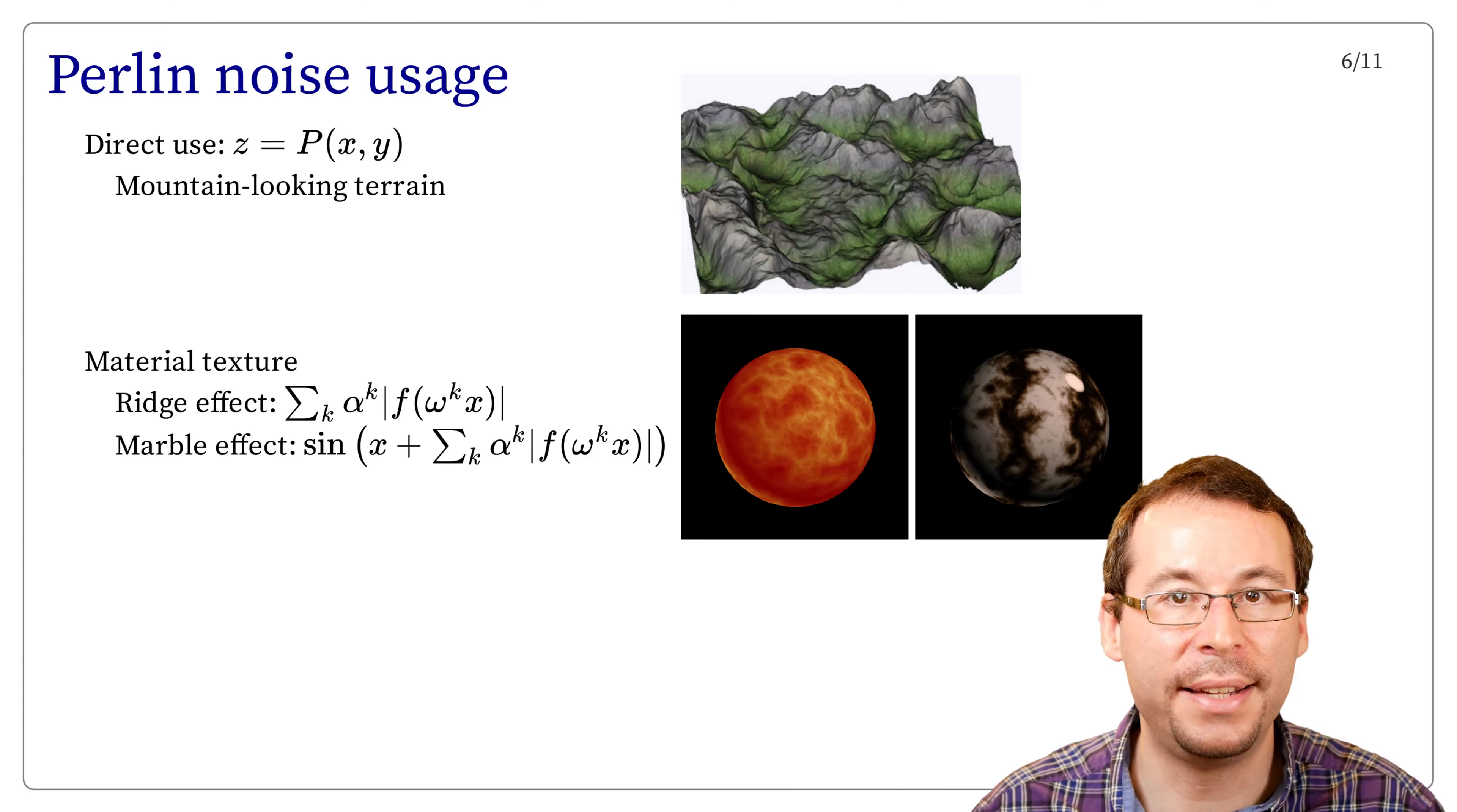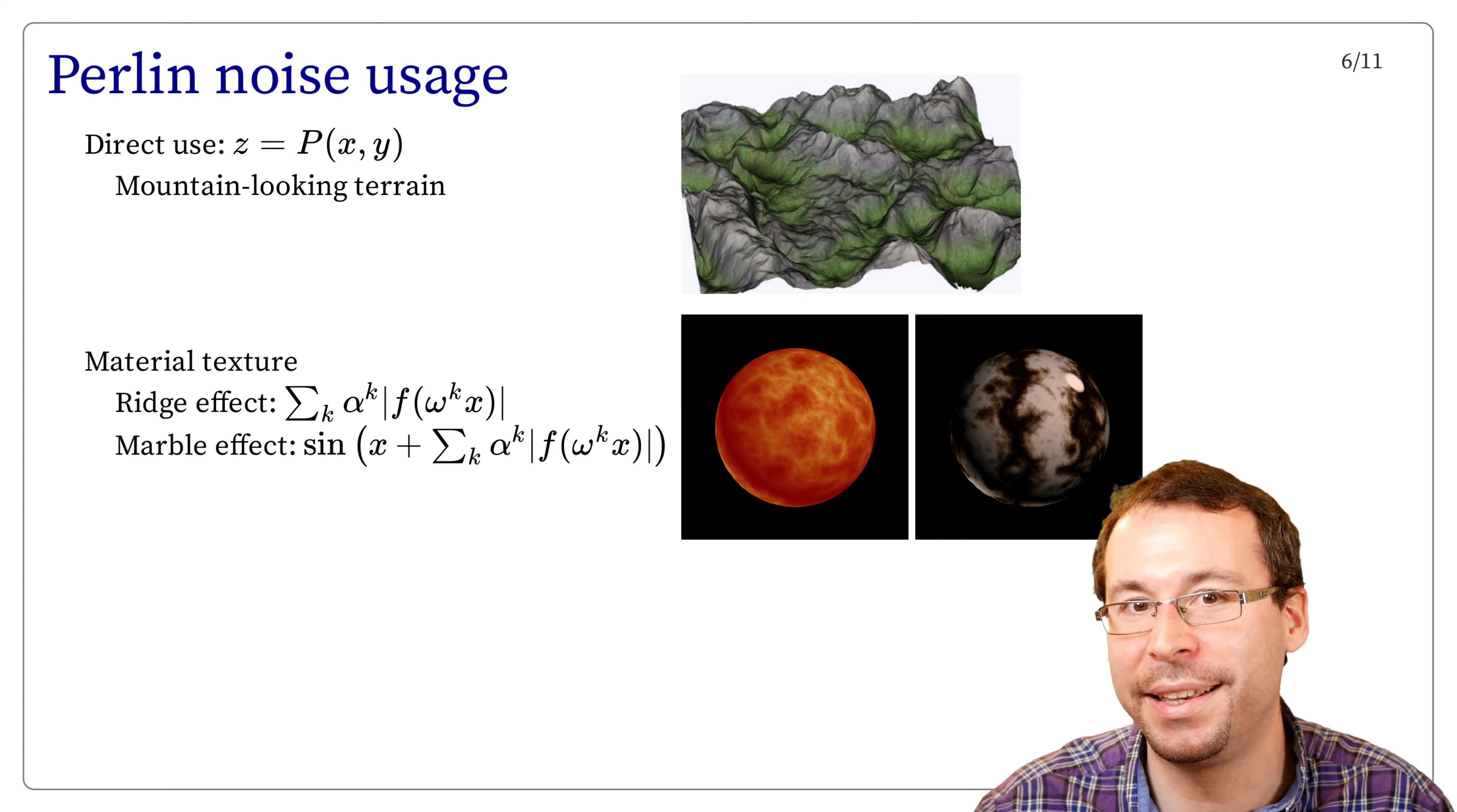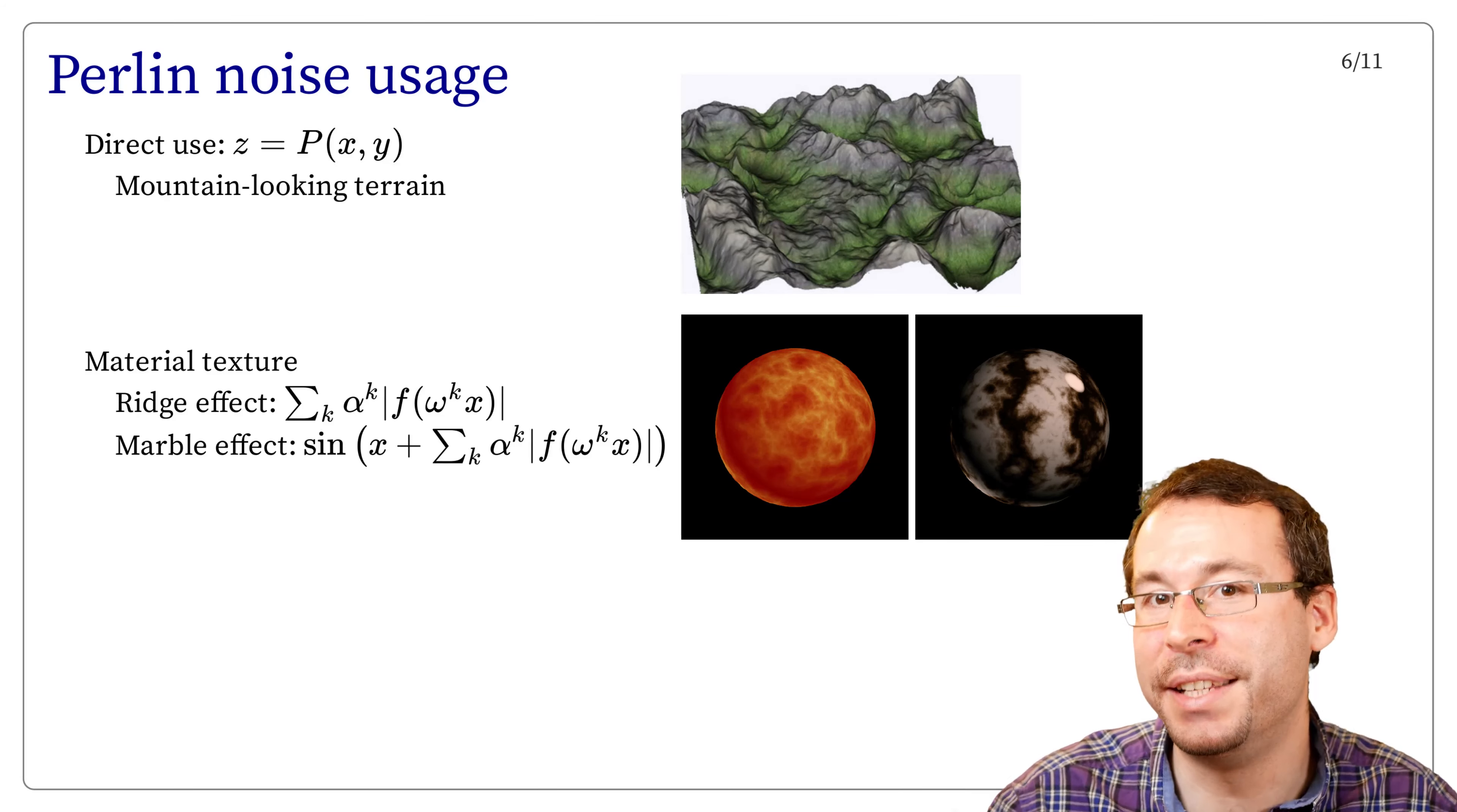Of course, it can be used to generate textures, and we can modify the function in the summation if we consider a sum of absolute values. We have ridges appearing near the zero value. This is used to model the specific patterns of sun-like texture. Also, the marble effect, which is kind of overly used, consists in modifying the function using a sine function to get some regular oscillation, but the Perlin noise brings the details.